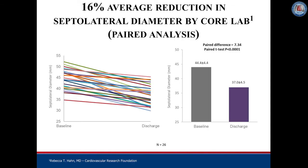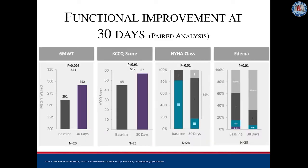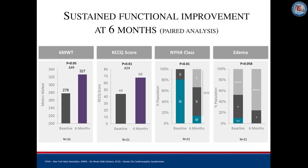The Cardioband resulted in a clinically significant reduction in the septolateral diameter in all implanted patients, and this was sustained over six months. This translated into important improvements in six-minute walk distance, Kansas City quality of life scores, New York Heart Association score, and peripheral edema. The quality of life gains noted at 30 days were sustained at six months follow-up.